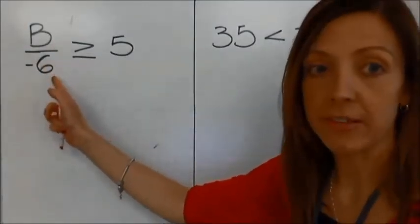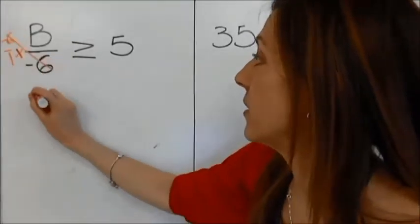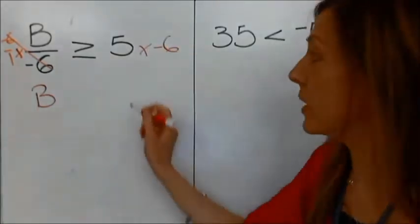b divided by negative 6. The inverse of dividing by negative 6 is multiplying by negative 6. So we're left with b. I'm going to multiply the right side by a negative 6, and that gives me a negative 30.